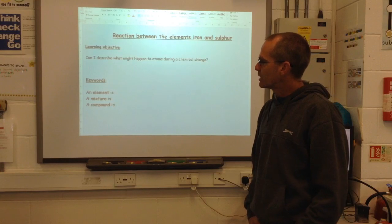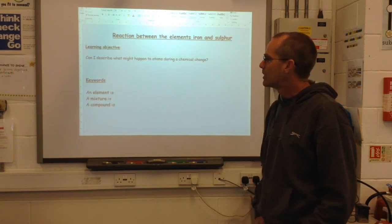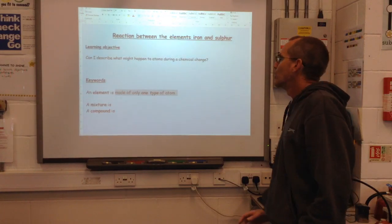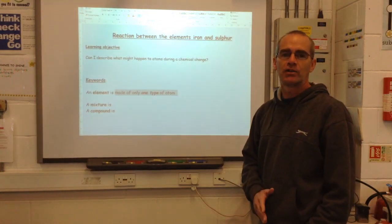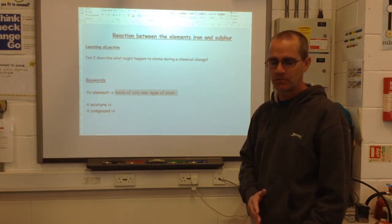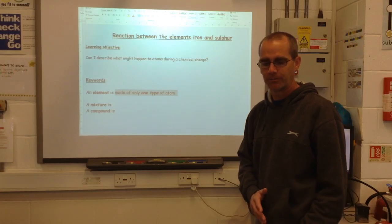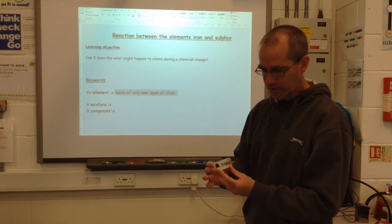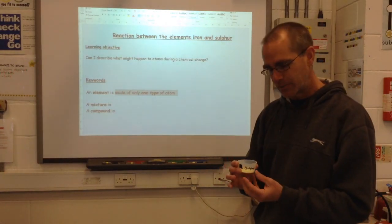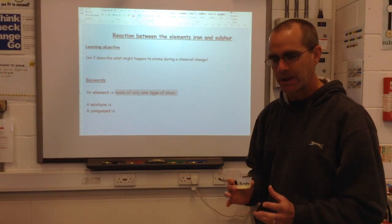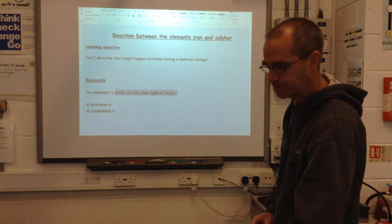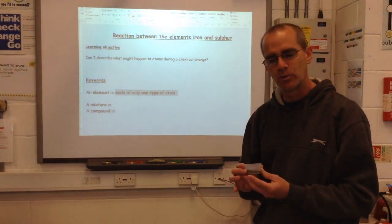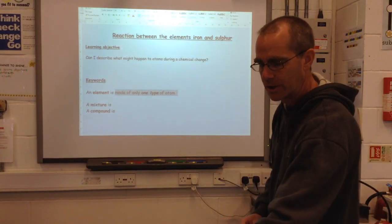A reminder of the three key words we've been covering recently. An element is something that is made of only one type of atom. Today we're going to be using sulphur — sulphur is an element in the periodic table, simply made of sulphur atoms. We're also using iron, again an element in the periodic table, purely made of iron atoms.